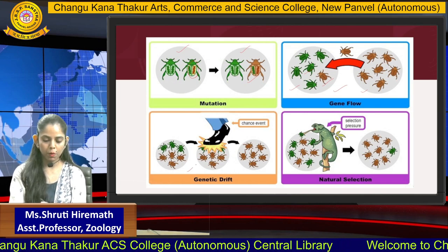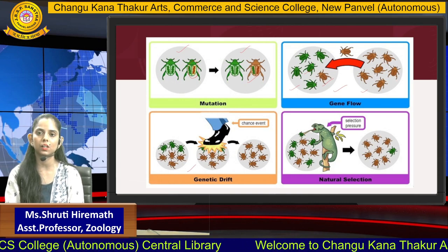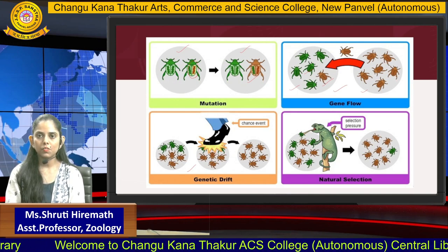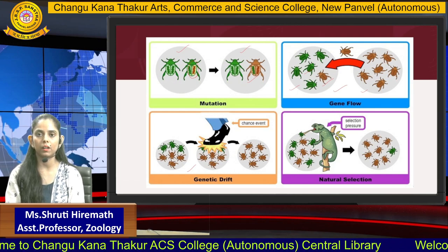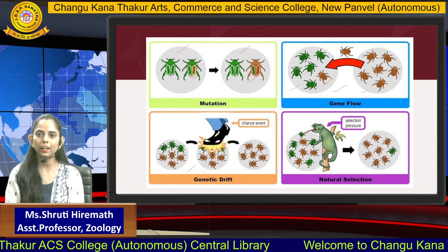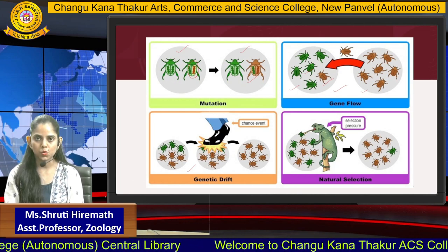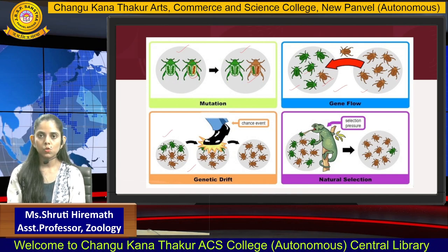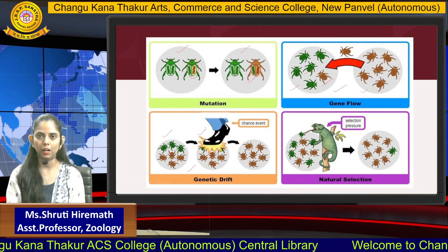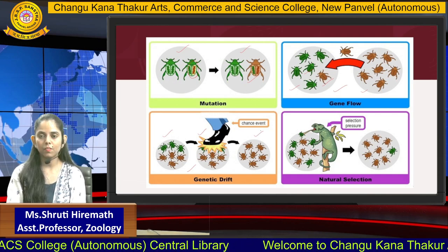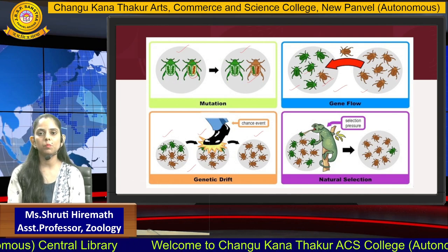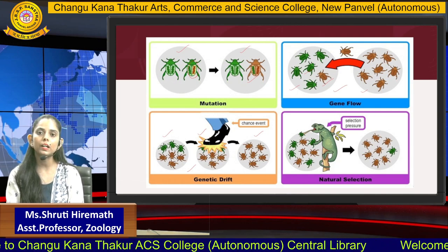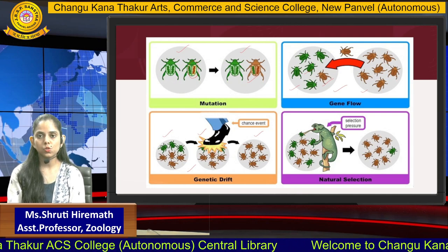The third force is genetic drift, which is a catastrophic or chance event. A chance event can be a catastrophic activity like a volcano, a flowing river, or a flood — events that can segregate, separate, or kill an organism or an entire species. In the diagram, you can see a population of brown and green bugs, but a stamping action kills all the green bugs, leaving only the brown bugs surviving. Whenever there is a genetic drift, it will result in evolution, deciding which species will arise and which will be eliminated.